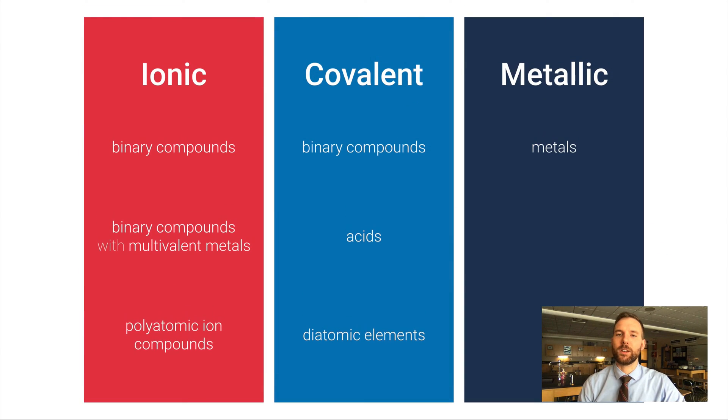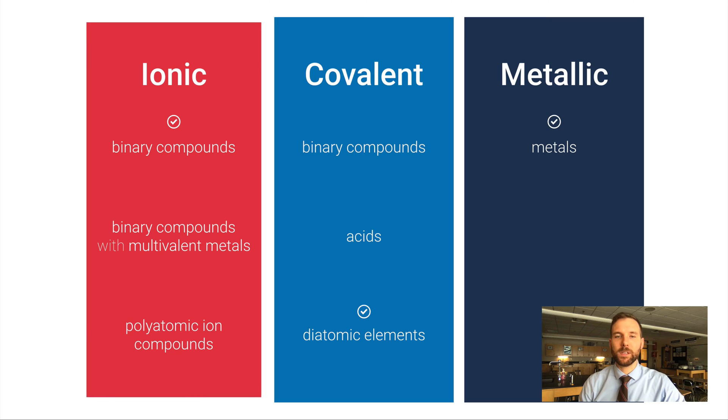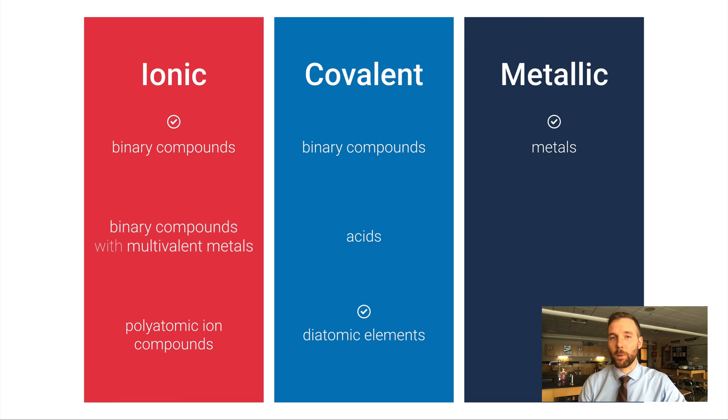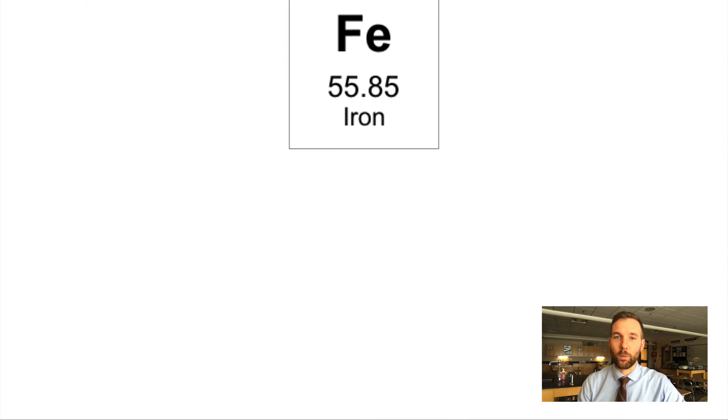Let's back up and look at our unit outline. In the ionic category, we've got simple binary compounds—that's just two parts, a metal and a nonmetal. In this video we're staying in the ionic category, but we're looking at the second piece: ionic compounds that contain multivalent metals.